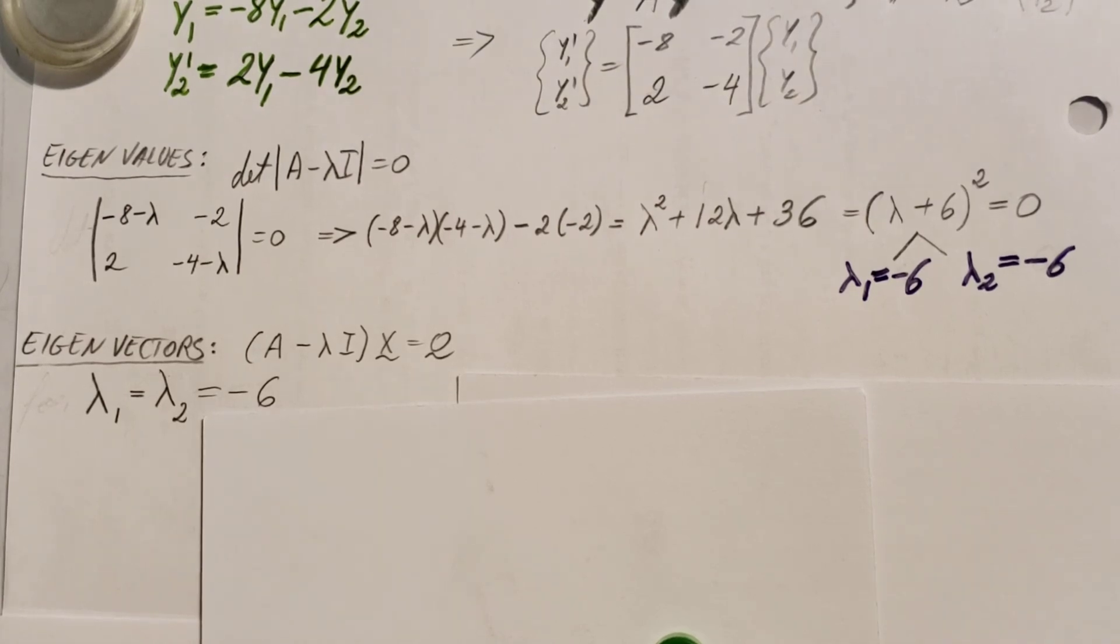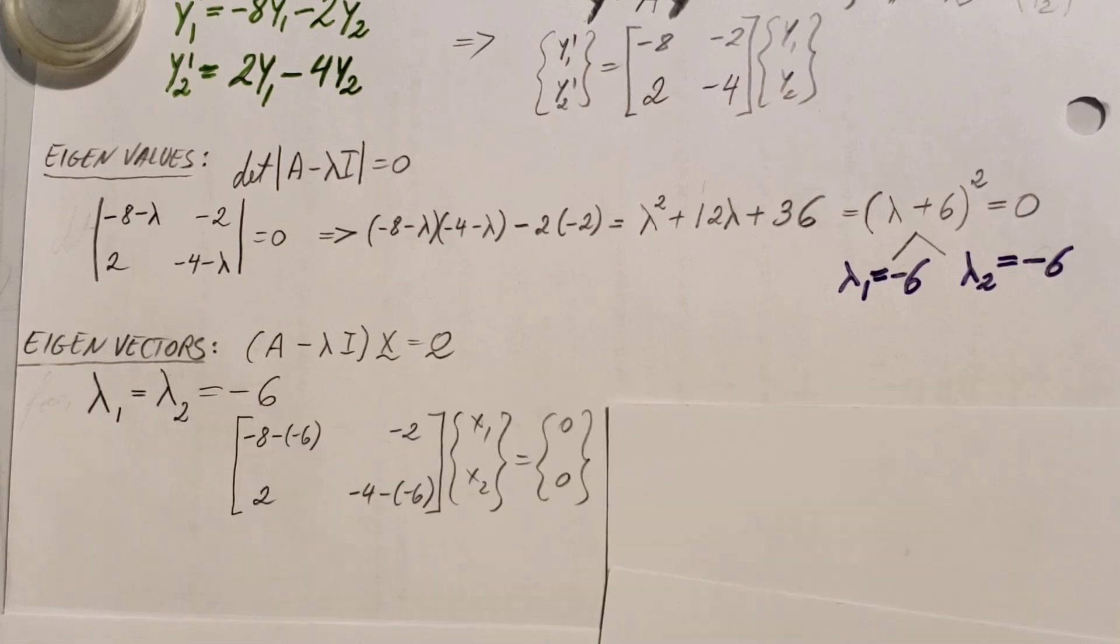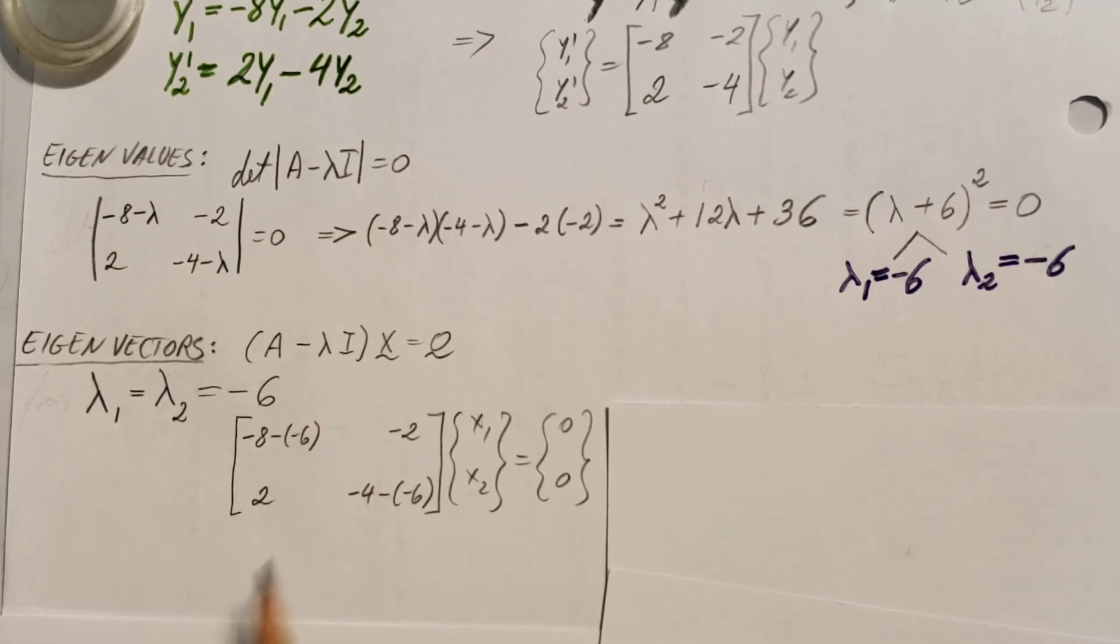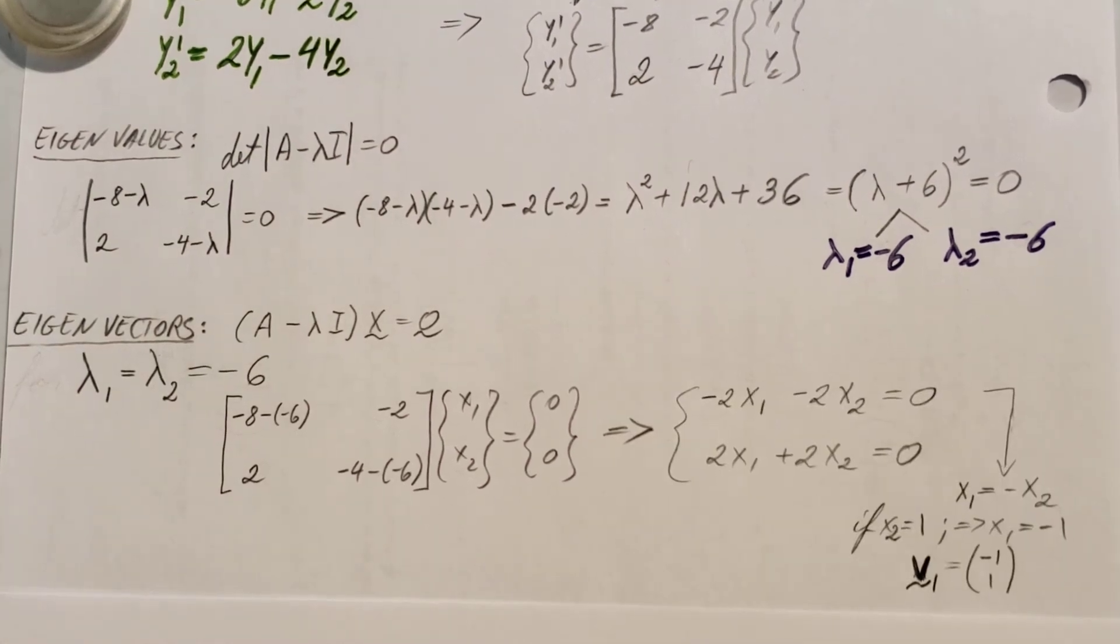Next step, let's start working on our eigenvectors. Here's the equation. Now lambda 1 and lambda 2 both equal negative 6. So that's what we're going to plug in, right here. Instead of lambda, negative 6, my matrix A minus the eigenvalue on the diagonal times my x-vector x1 and x2 equals the zero vector 0, 0.